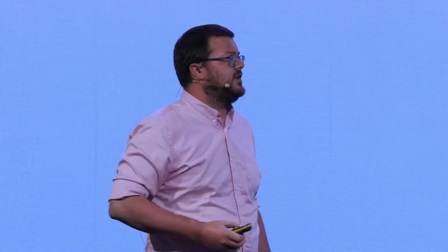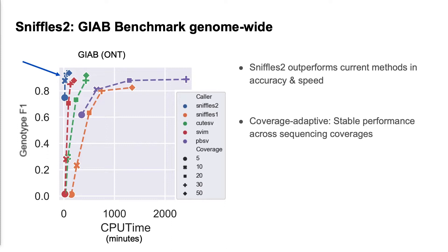With all these advancements, it wasn't surprising that more and more studies are utilizing long read platforms, and as such we were convinced it was time to upgrade Sniffles to Sniffles version 2. Here is the first benchmark from Genome in a Bottle. On the x-axis is CPU time, on the y-axis the genotype F1 accuracy - basically a measurement of precision and sensitivity. In orange is Sniffles 1, and in dark blue on the top left is Sniffles 2, really kicking ass in both speed and sensitivity.